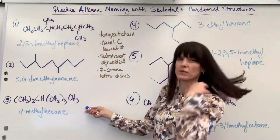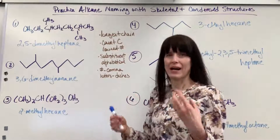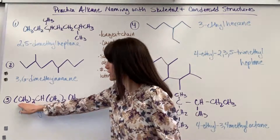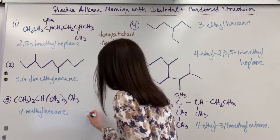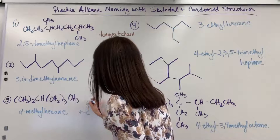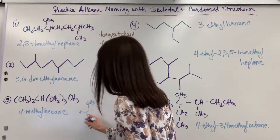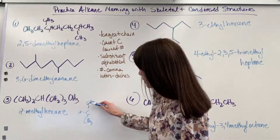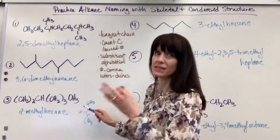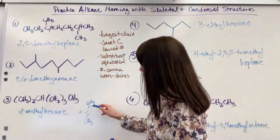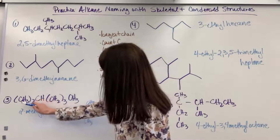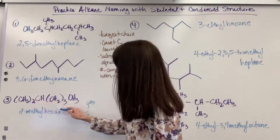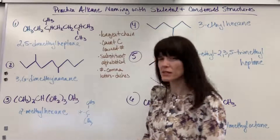Let's look at this condensed formula right here. I want to break this out so it helps you visualize and be able to name it. So I have my two CH3s with this carbon — you'd have your hydrogen, a CH3 and a CH3. If you need to write it out so you can name it, write it out. So I would have a one and a two — remember the long continuous chain, not just straight chain. Counting: one, two, three, four, five, six — my longest chain is going to be six.